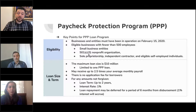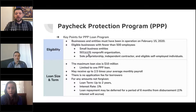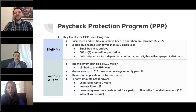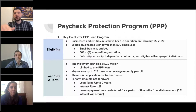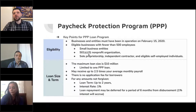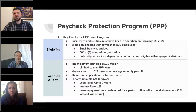Here's how the loan amounts are calculated: you may receive up to 2.5 times your average monthly payroll. For example, if someone receives $120,000 annually, you divide by 12 to get $10,000 per month, then multiply by 2.5 times — that gives you $25,000 of loan you can apply for. However, the cap per employee for the cash equivalent is $100,000 annually. So it doesn't matter if they make $105,000, $130,000, or $200,000 — you can only go up to that $100,000 cash equivalent for that employee.